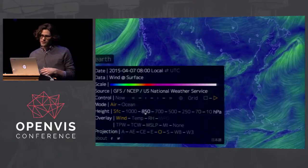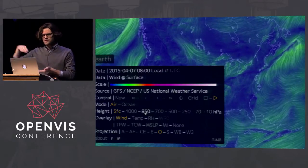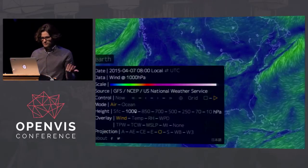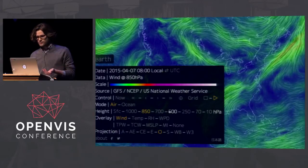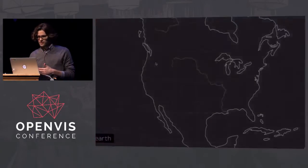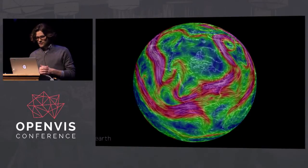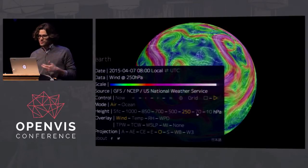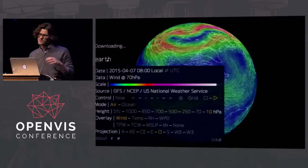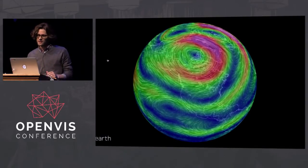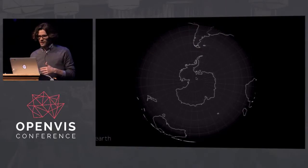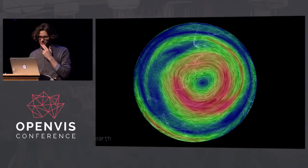We can look at different layers of the wind and go up in the atmosphere using decreasing pressure levels in hectopascals — same as millibars. We're getting closer to the jet stream around 500 hPa; around 250 is where it really kicks in. We can go higher into the stratosphere at 70 hectopascals, and at 10 hectopascals — about 30 kilometers — we can see the polar vortex that sets up over each pole during the winter.